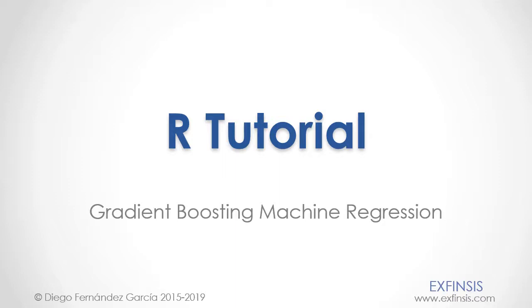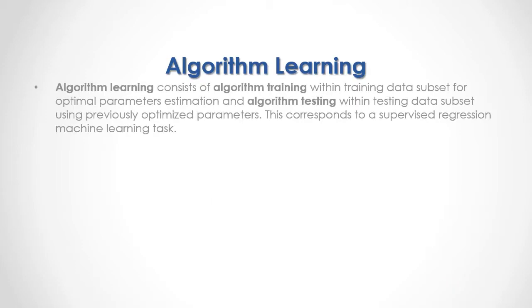Our tutorial: Gradient Boosting Machine Regression. Algorithm learning consists of algorithm training within a training data subset for optimal parameter estimation, and algorithm testing within a testing data subset using previously optimized parameters. This corresponds to supervised regression machine learning tasks.